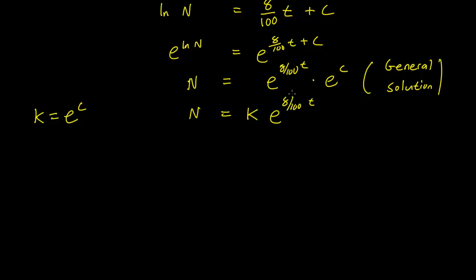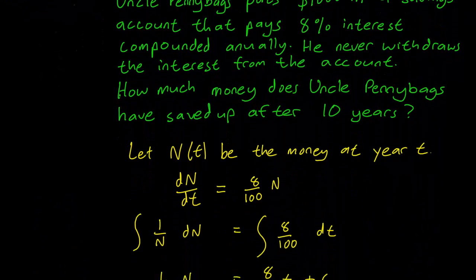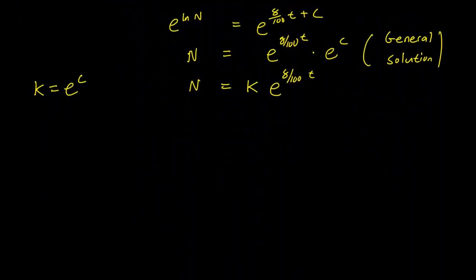We want to see what initial values we have. We only know that Uncle Pennybags started out with $1,000, but this is actually an initial condition in disguise. We know that when time equals zero, the amount of money was $1,000.